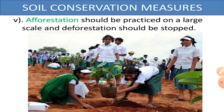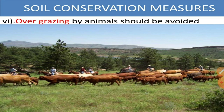Afforestation means planting different kinds of plants and trees. The soil is covered by plants and trees so that the roots hold the soil and prevent soil erosion. Over-grazing by animals should also be avoided and controlled, as this is also a very important measure for preventing soil erosion.